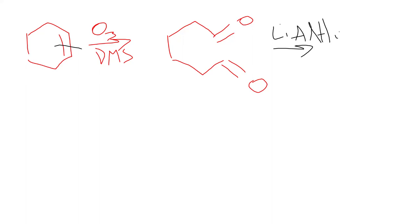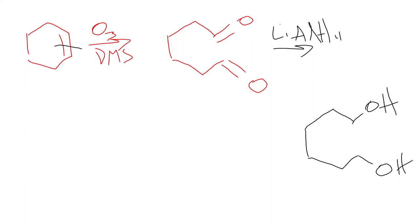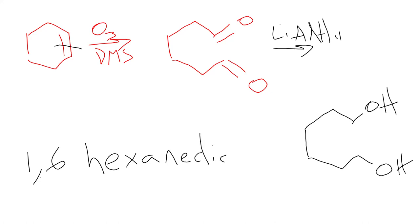The second step was to fully reduce that with lithium aluminum hydride. We're going to take those aldehydes and turn them both into primary alcohols. All the carbons are back in the same spot, with OH groups on each end. Our final product is 1,6-hexanediol.